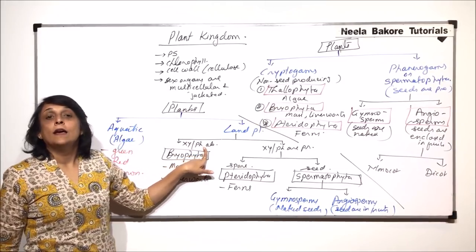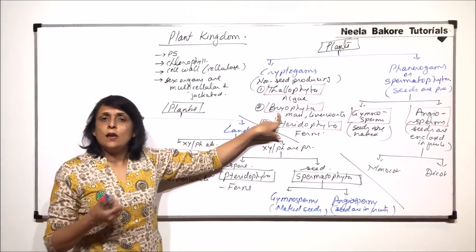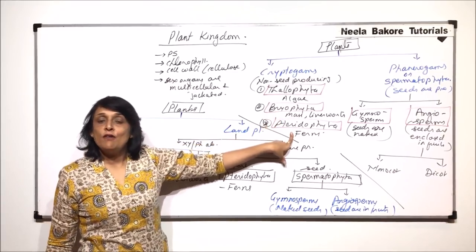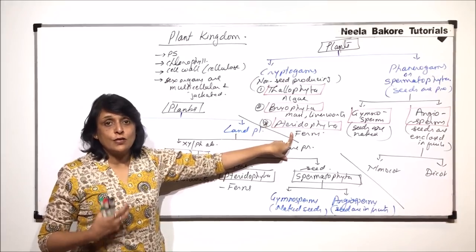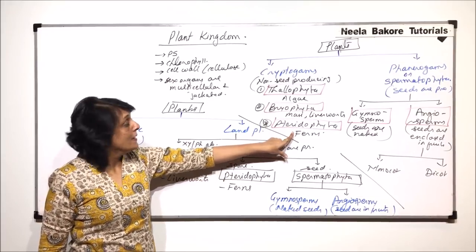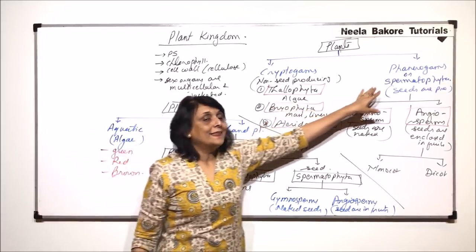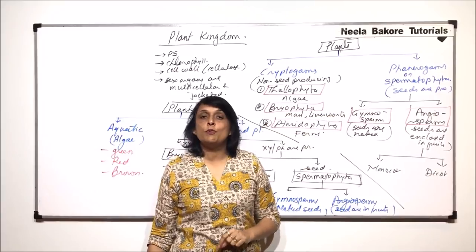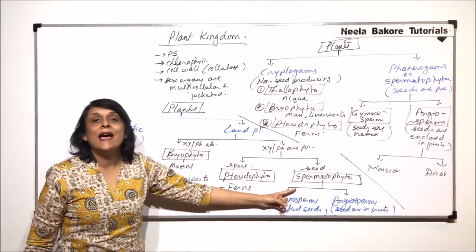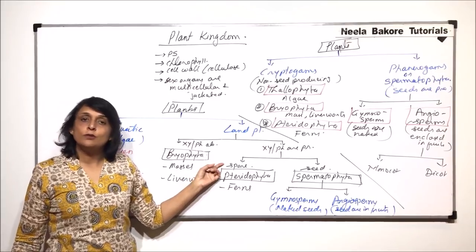Bryophyta are without xylem and phloem, reproduction is by spore formation, and the body is again not differentiated into true roots, leaves, and stem. Pteridophytes are land plants — they have root, stem, and leaf-like structures properly developed with vascular tissue, but reproduction is by spore formation rather than seeds. Phanerogames or Spermatophyta includes only those plants which reproduce by seed formation, under which we have Gymnosperms and Angiosperms.